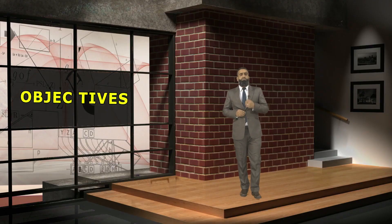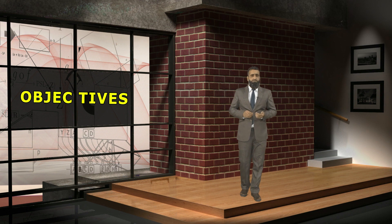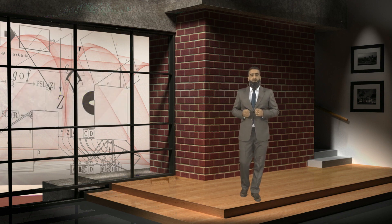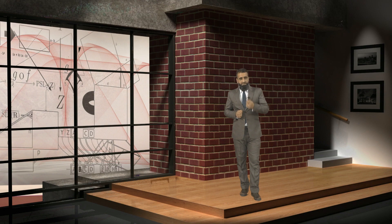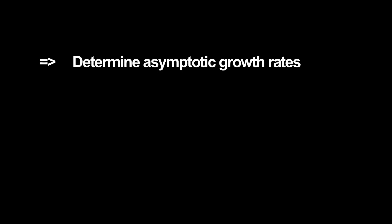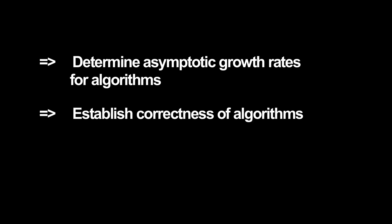The main objective of this course is to make you familiar with subjects concerning algorithmic complexity. By the end of this course, it is expected that you should be able to understand the use of several design techniques, write and solve recurrence relations for recursive algorithms, determine asymptotic growth rates for algorithms, and establish correctness of algorithms.